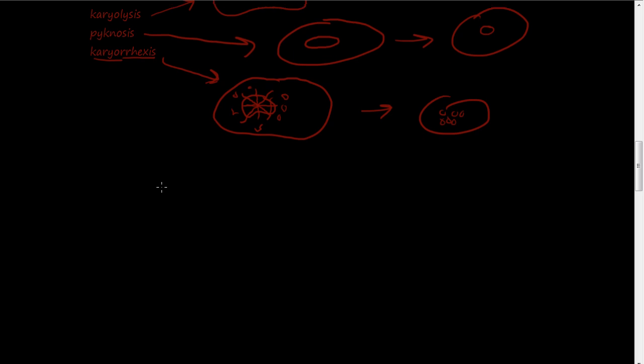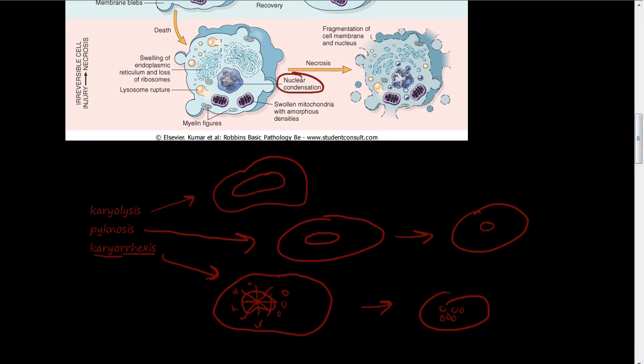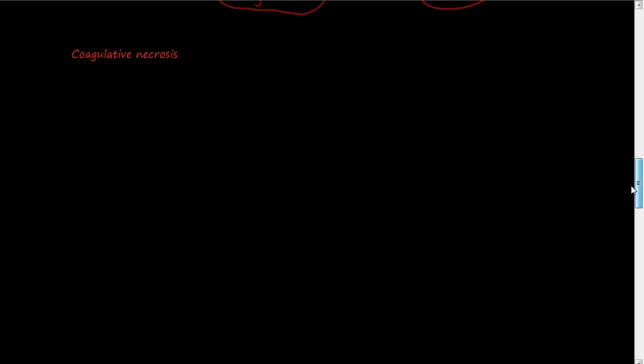So to continue on, let's talk about the morphology of necrosis. The first type of tissue necrosis is coagulative necrosis. In the last picture we talked about the microscopic occurrences or processes of necrosis. Now we're going to talk about the gross appearance. What would it look like if I had the tissue in hand?